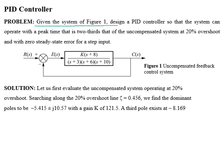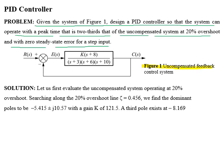We will design a PID controller so that the system operates at a peak time that is two-thirds of the uncompensated system, with 20% overshoot and zero steady-state error for a step input. The forward path of the system has one zero at location minus 8 and three poles at locations minus 3, minus 6, and minus 10 in the S-plane.